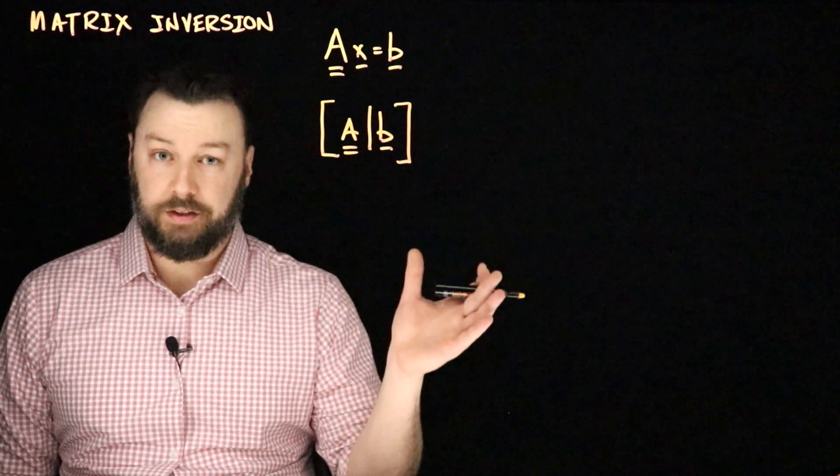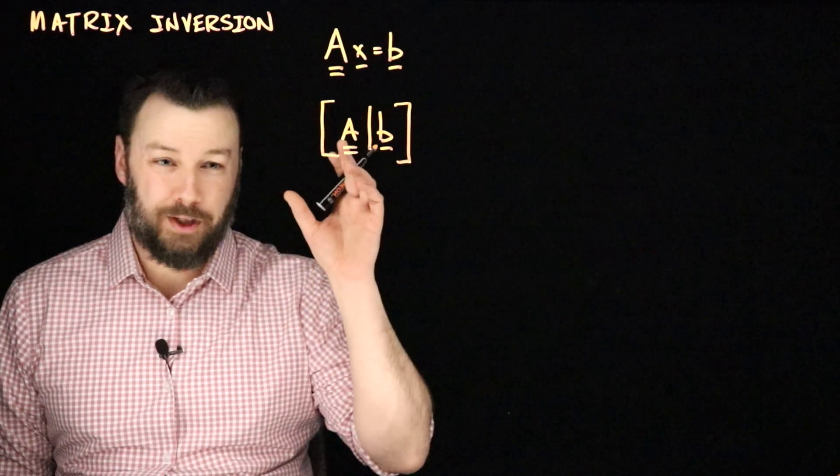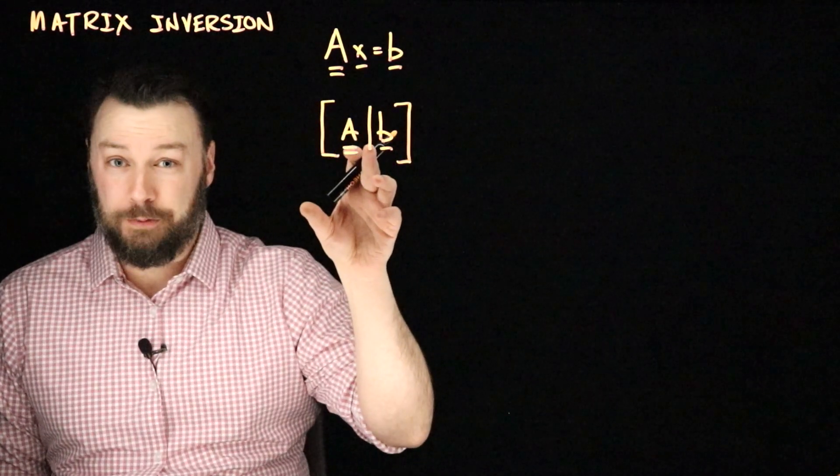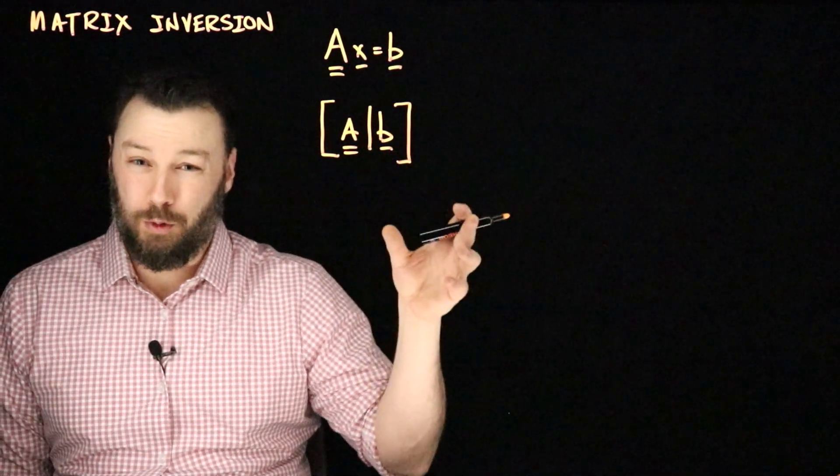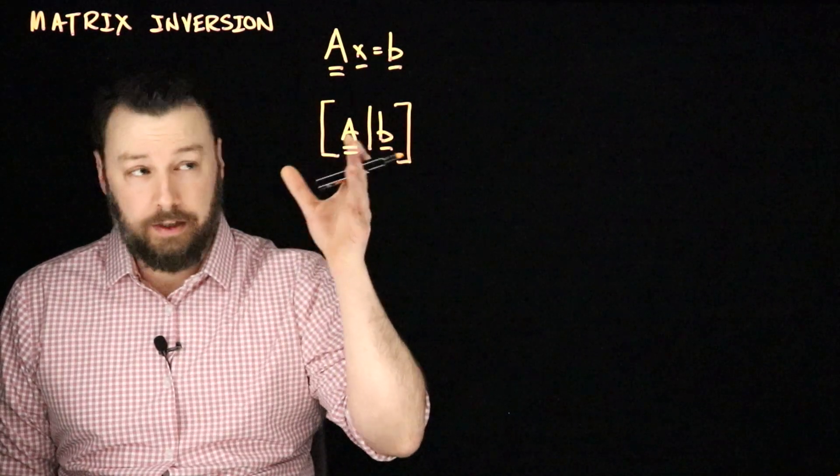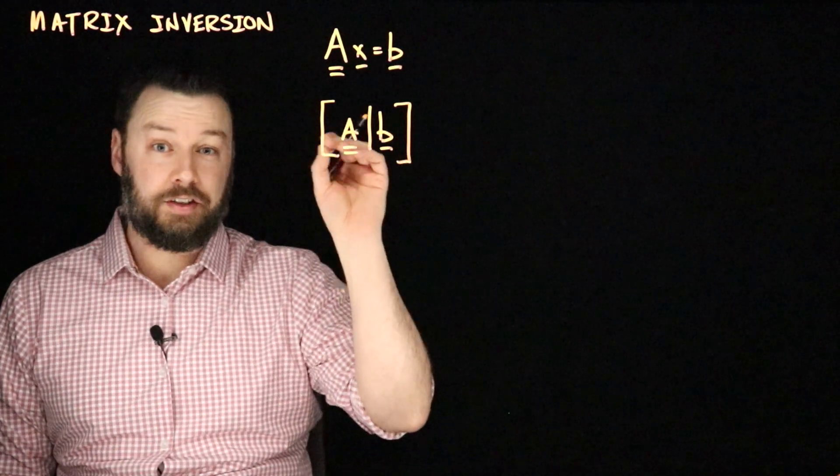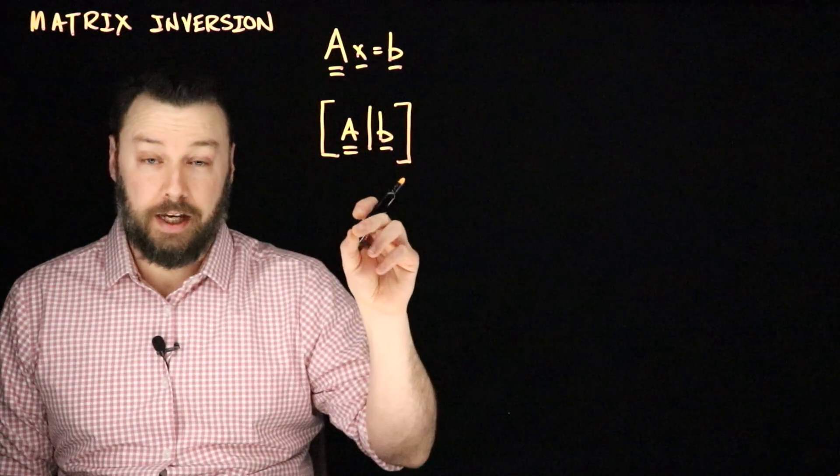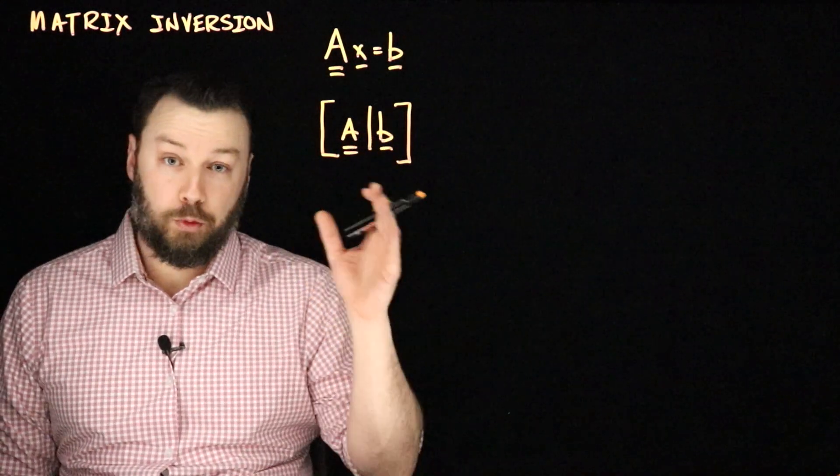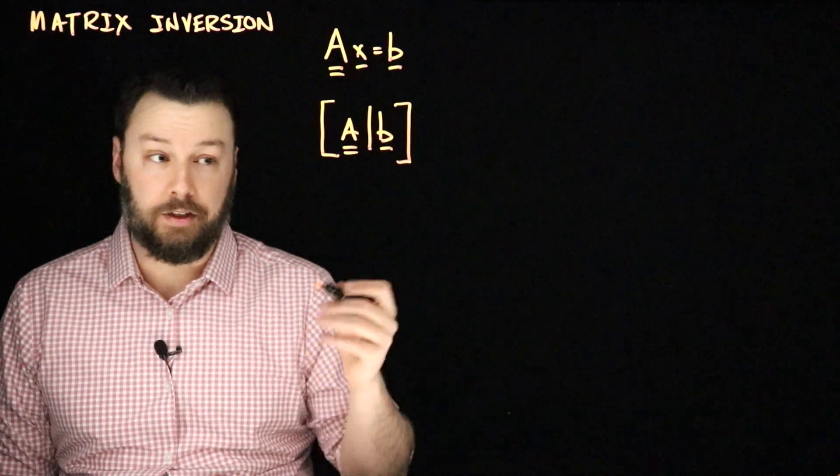Now that's great and straightforward, but you might reasonably wonder why it's so bespoke. That is to say, it seems very specific to a particular A and a particular b. But what if I had the same A for some new problem but a different b? Would I have to do all that work all over again?